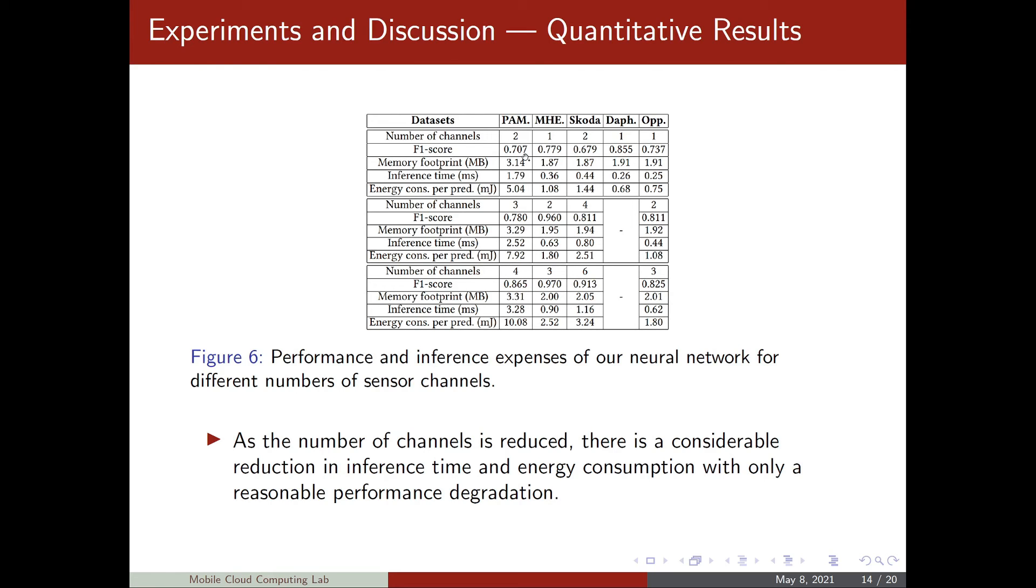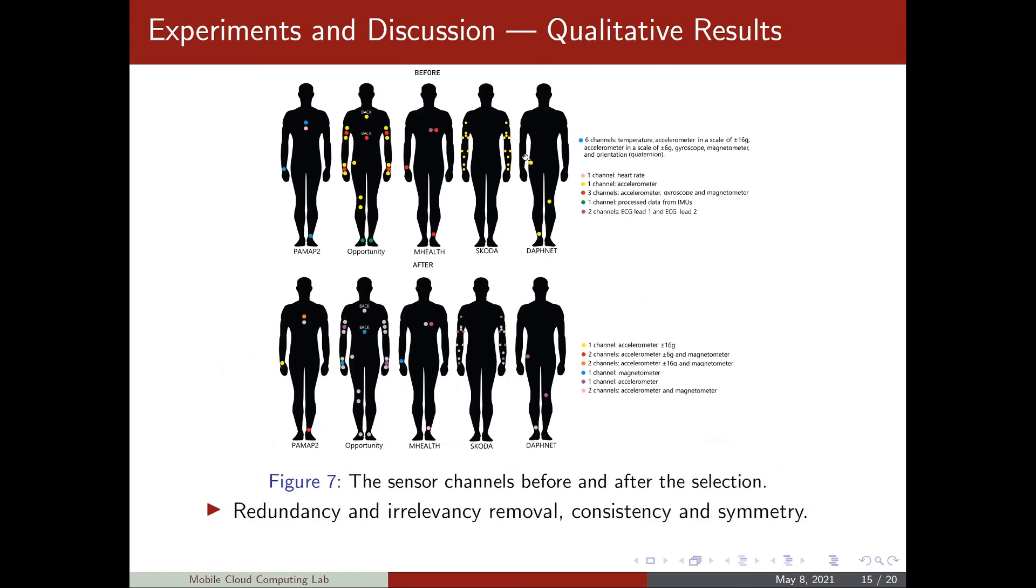Let's move on now to the qualitative results. At the top here, we see all the available sensor channels for all five datasets. Each sensor channel type has a different color. At the bottom here, we see again for all five different datasets, the selected sensor channels and in gray, the removed sensor channels.